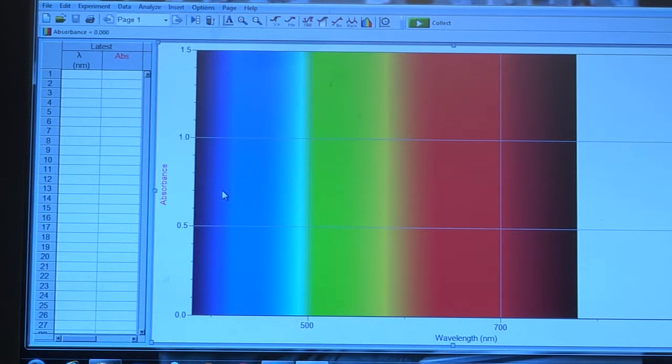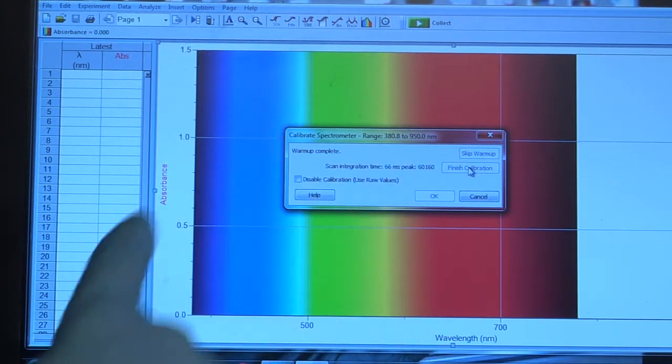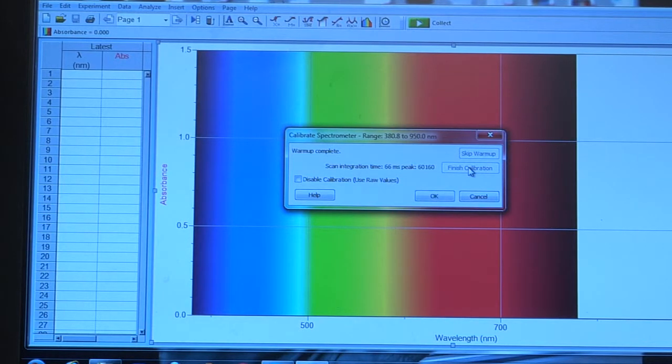Which means that there is the amount of light that's actually passing through. So if you look carefully right here, you can see it's doing a scan of all of the visible wavelengths.